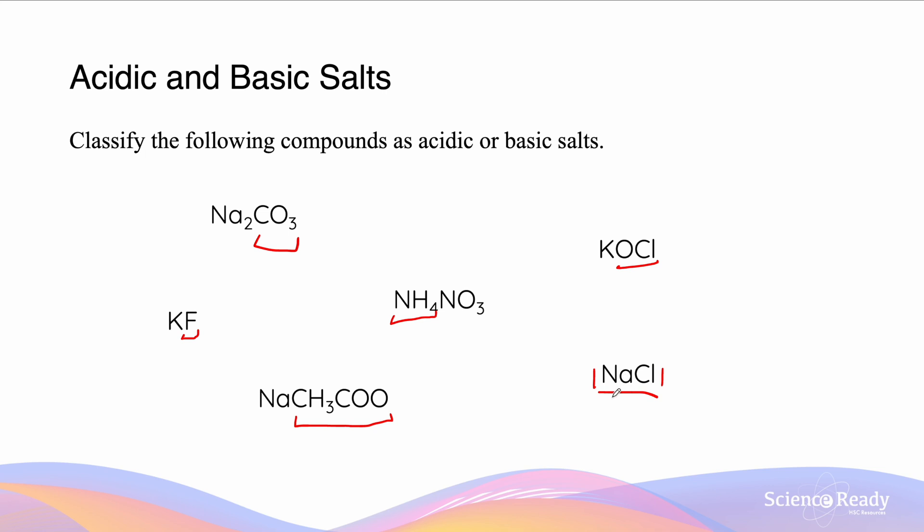So the reason for that is because if we look at Na and Cl, both of these ions are the conjugates formed from the dissociation of a strong acid and a strong base. Cl comes from HCl. Na comes from NaOH. Since they are strong, they don't have the ability to act in equilibrium and to reverse their reaction. Na cannot act as a Bronsted-Lowry acid and Cl cannot act as a Bronsted-Lowry base. So therefore, NaCl is a neutral salt.